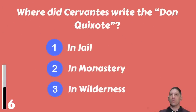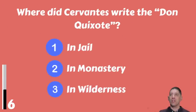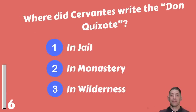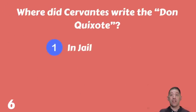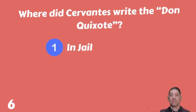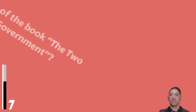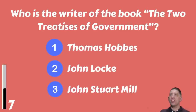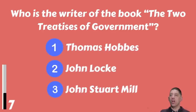Where did Cervantes write Don Quixote — in jail, in a monastery, or in the wilderness? The answer is in jail. Who is the writer of the book 'Two Treatises of Government' — Thomas Hobbes, John Locke, or John Stuart Mill?